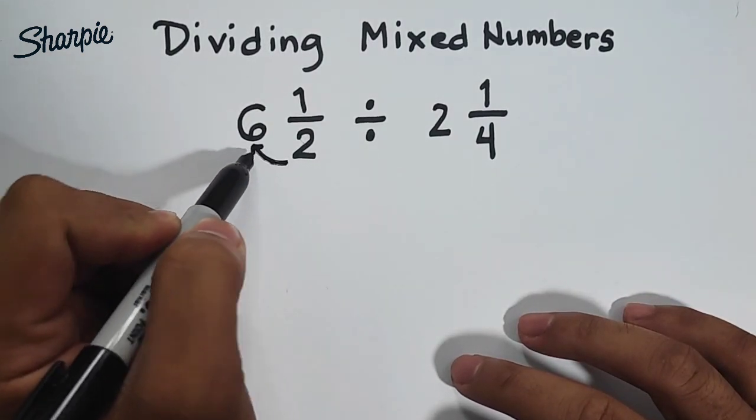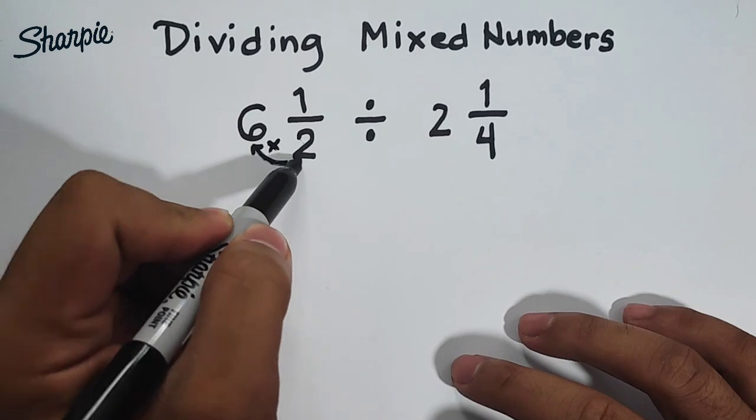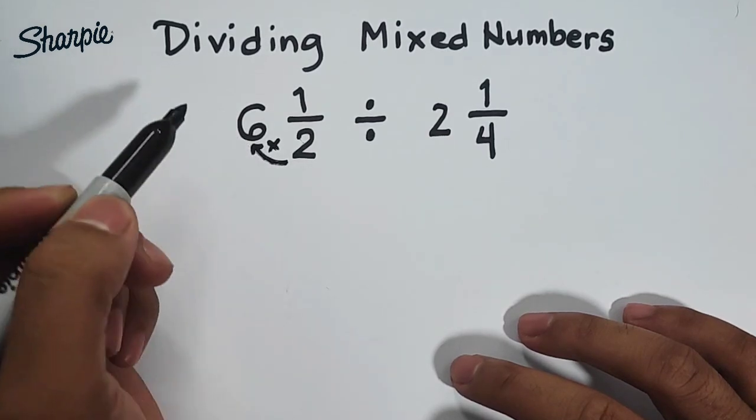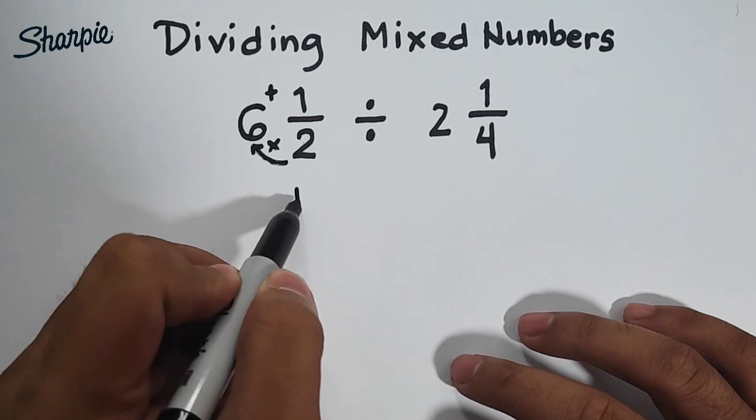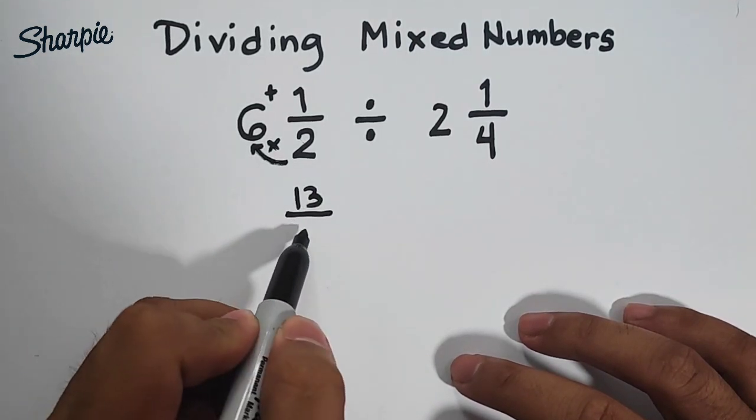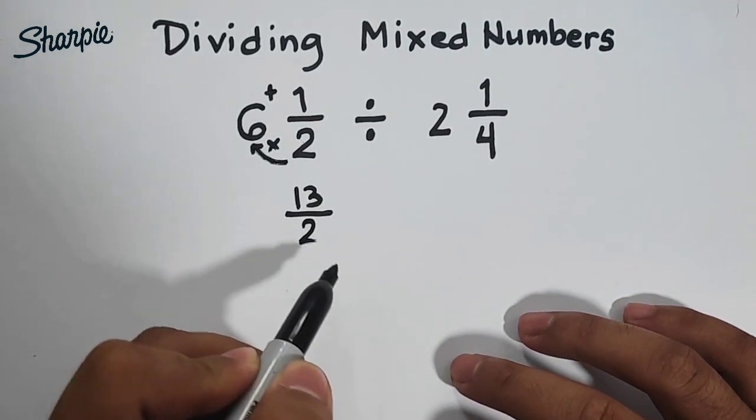We will multiply the denominator by the whole number, that is 6 times 2 or 2 times 6, that is 12, plus 1. That will give us the answer of 13. Then copy your denominator.